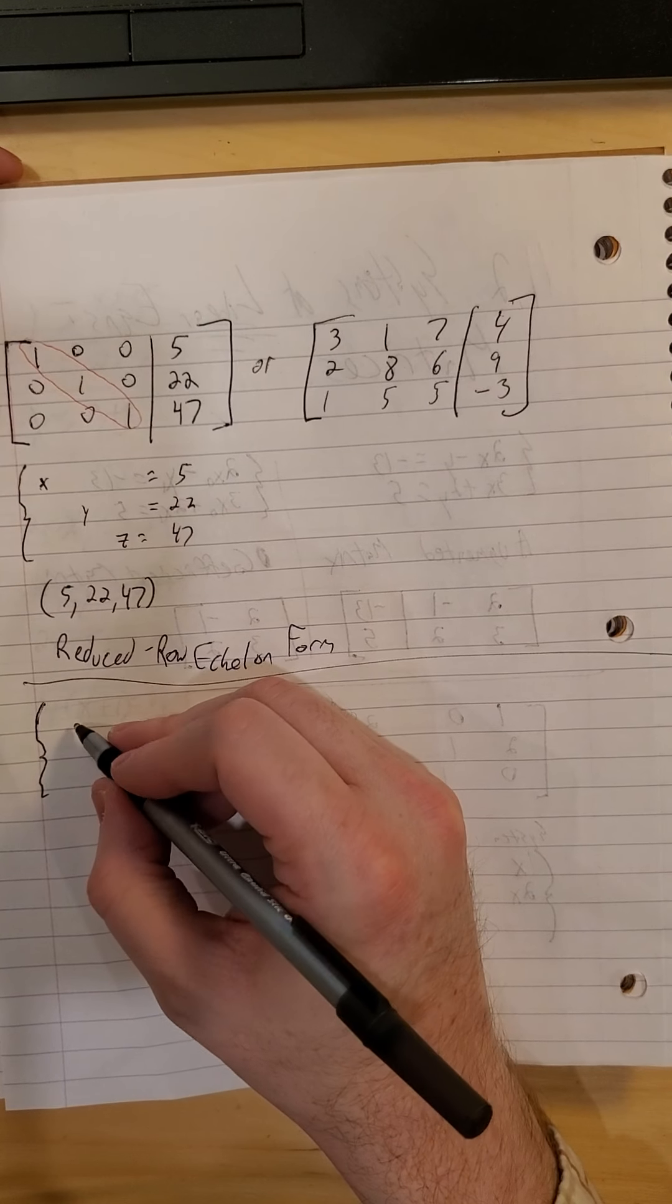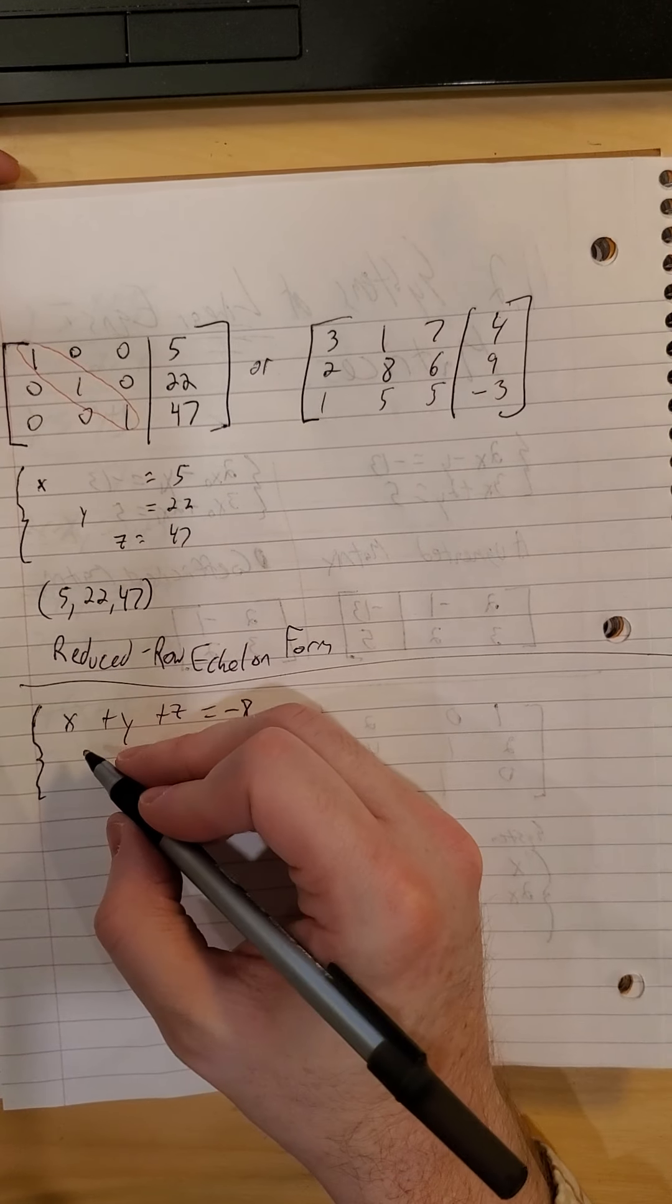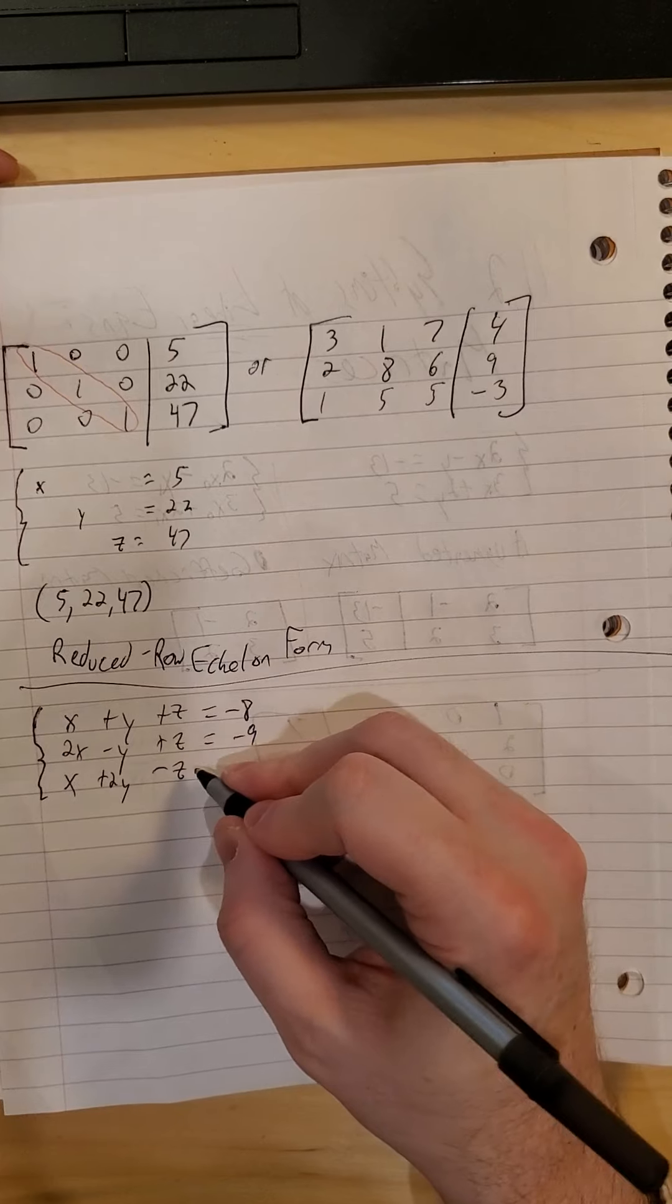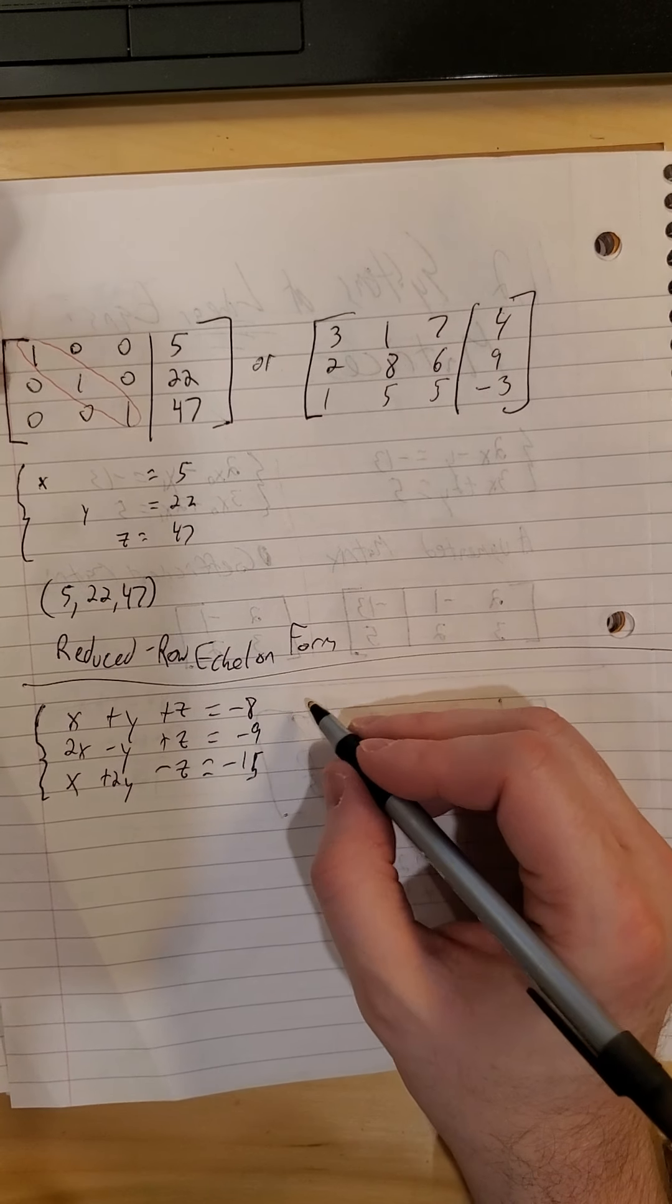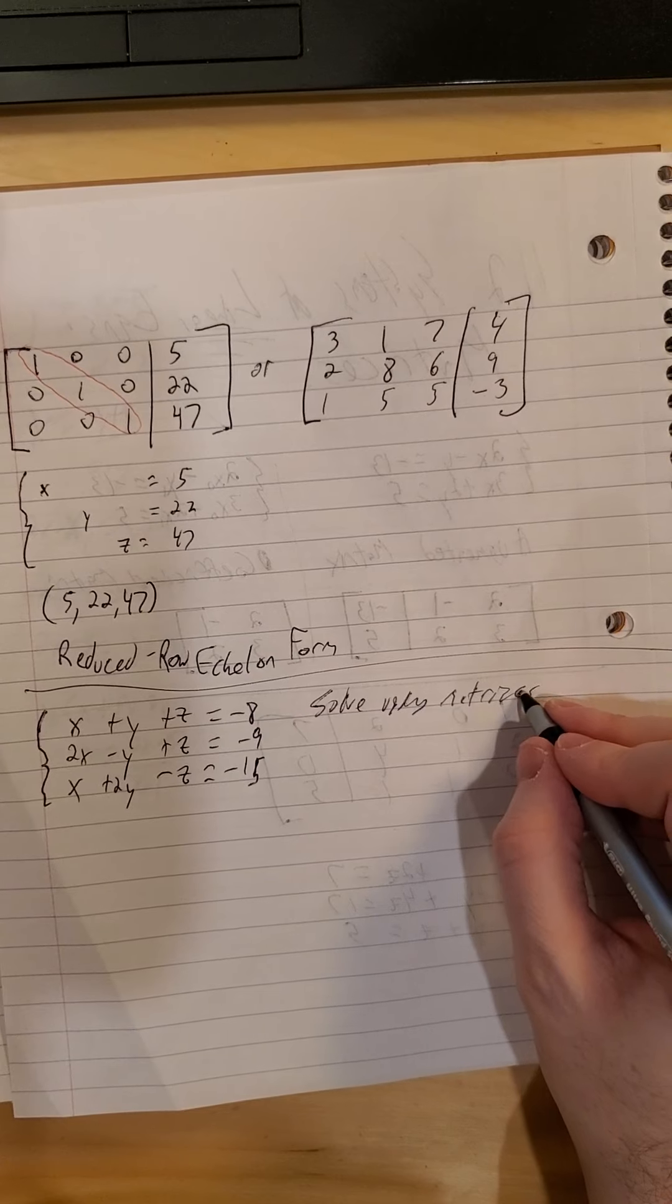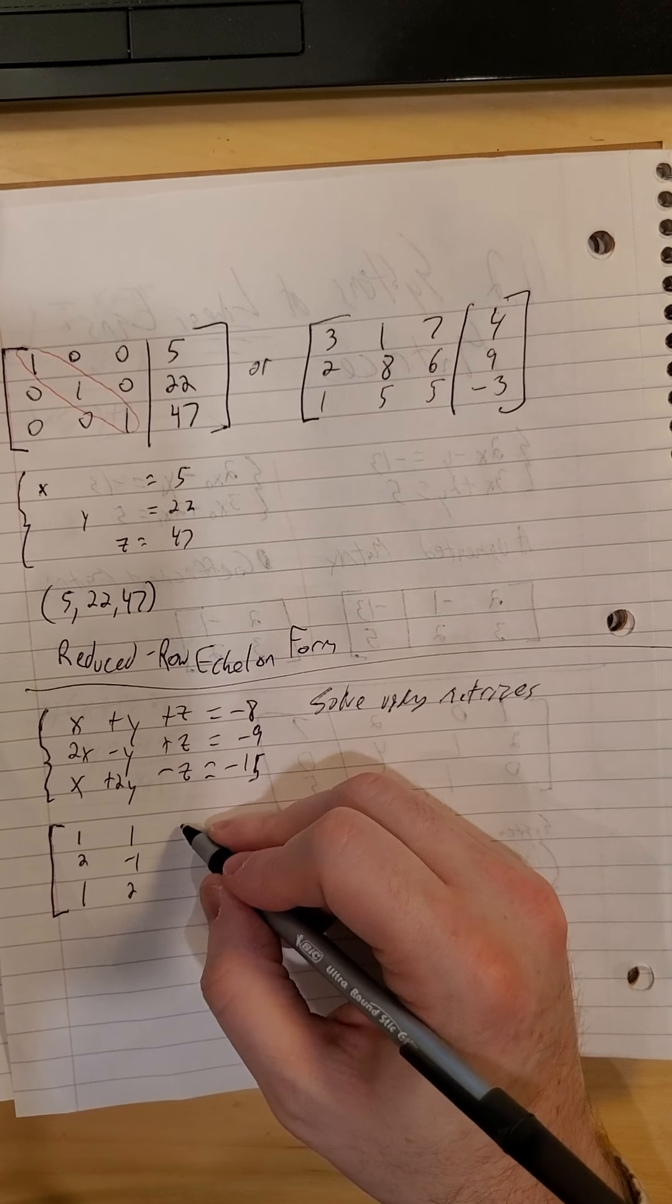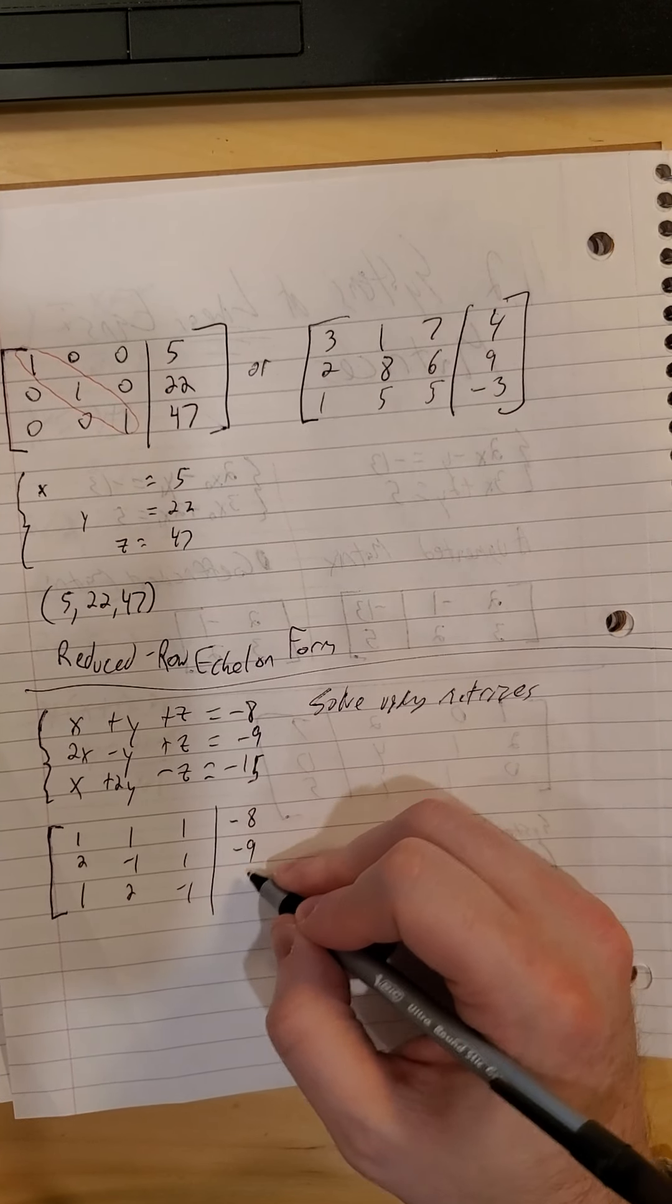Alright, so let's actually work on solving one of these guys. So we'll do x plus y plus z is worth negative 8. 2x minus y plus z is worth negative 9 and x plus 2y minus z is worth negative 15. So if I want to solve using matrices, first I'll have to turn it into a matrix. So column 1, I'd have a 1, 2, and a 1. Column 2, a 1, a negative 1, and a 2. Column 3, 1, 1, negative 1. And then our thing on the other side of the collection of equal signs, negative 8, negative 9, negative 15.